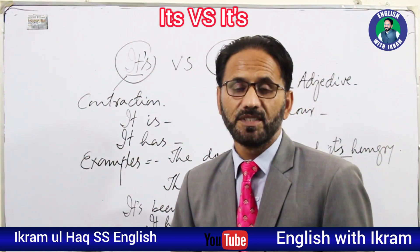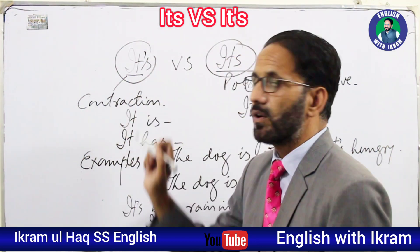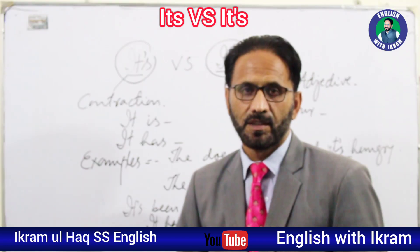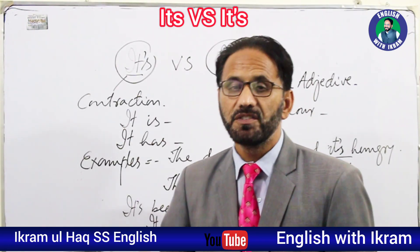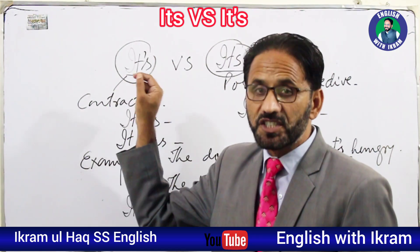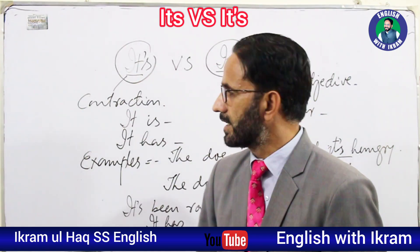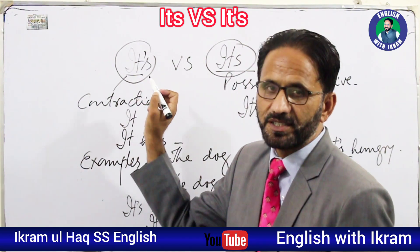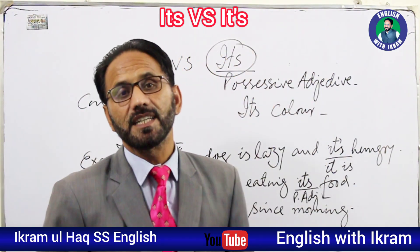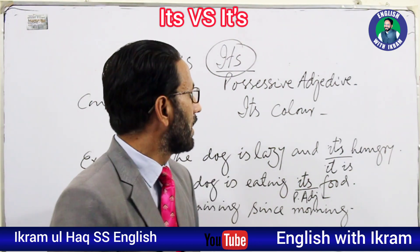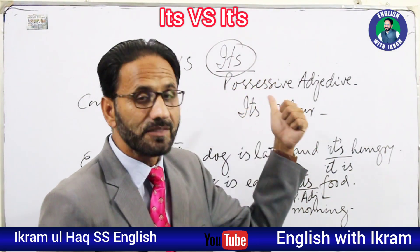The apostrophe form 'it's' is a contracted form — a contraction of 'it is' or 'it has'. For the words 'it is' or 'it has', we use this contraction. But 'its' without an apostrophe is a possessive adjective, like 'my,' 'your,' 'his,' 'her' — it's a possessive adjective.